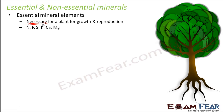Examples of essential mineral elements are nitrogen, phosphorus, sulfur, potassium, calcium, and magnesium. These are all examples of essential mineral elements. They are extremely necessary for growth and reproduction, because if they are not there, growth is going to stop, reproduction is going to stop, and eventually the plant life cycle will not be completed.